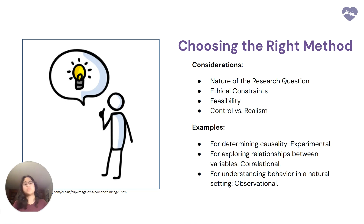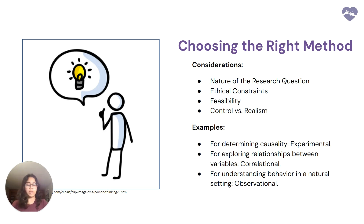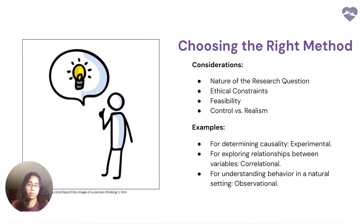How do you choose the right method? First, think about the nature of your question and any ethical constraints — for example, what you're allowed to do morally, such as not testing any drug you create on a human. Then think about whether you want something in a natural or controlled setting. For determining causality, use experimental. For exploring relationships between variables, use correlational. For understanding behavior in a natural setting, choose observational.